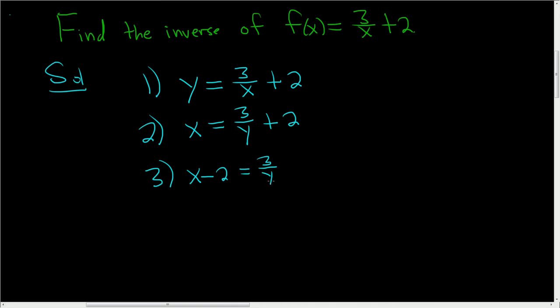Now keep in mind what we're looking for. We're looking for y. It's in the denominator. So we'll multiply both sides by y. And now it's no longer in the denominator. So we have y times x minus 2 equals 3.